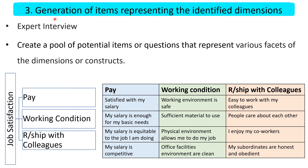The third step is items generation. Once we have dimensions, we have to generate items to represent those identified dimensions. For each dimension, we have to find out items or questions that adequately represent them. We can interview or discuss with subject matter experts, or refer to some literature or questionnaires. We have to create a pool of potential items or questions that represent the various facets of the dimensions or constructs.